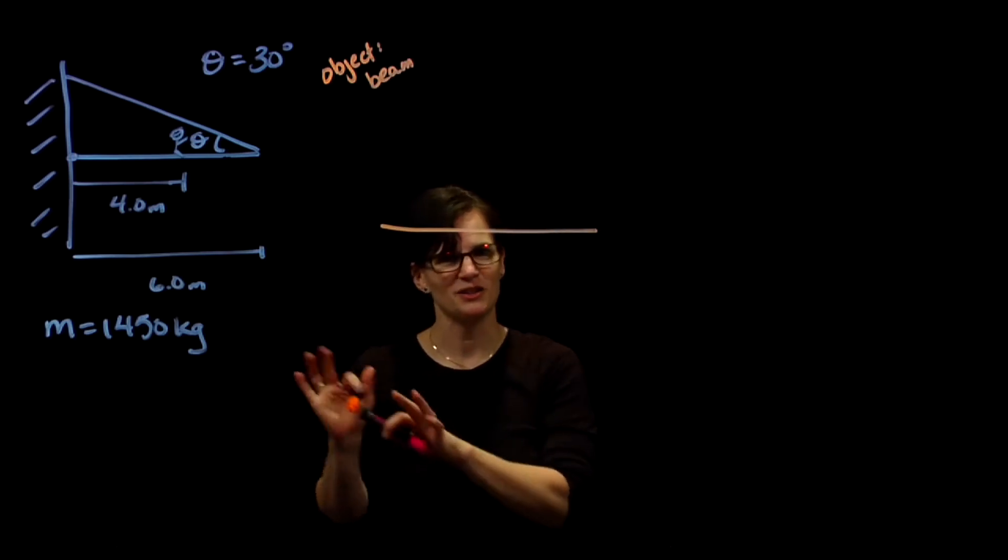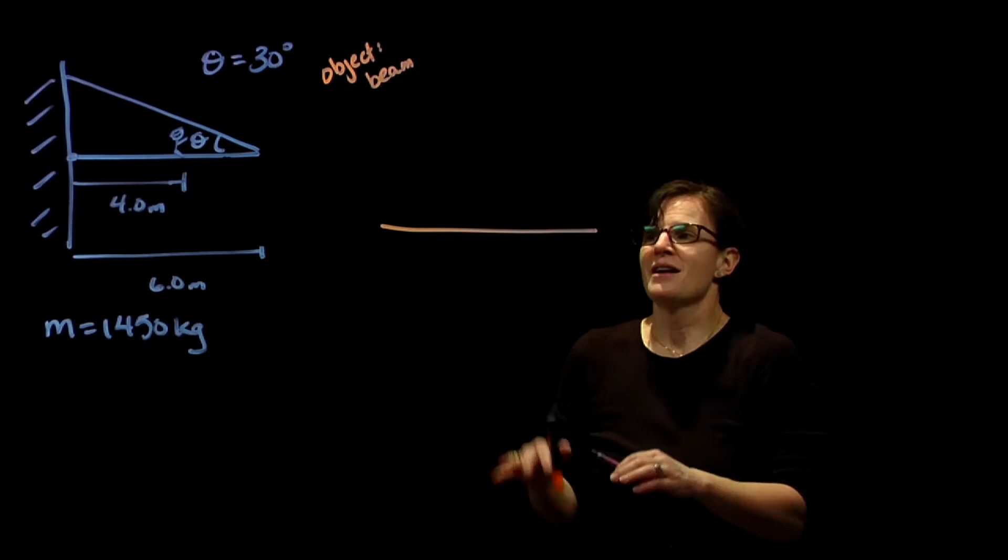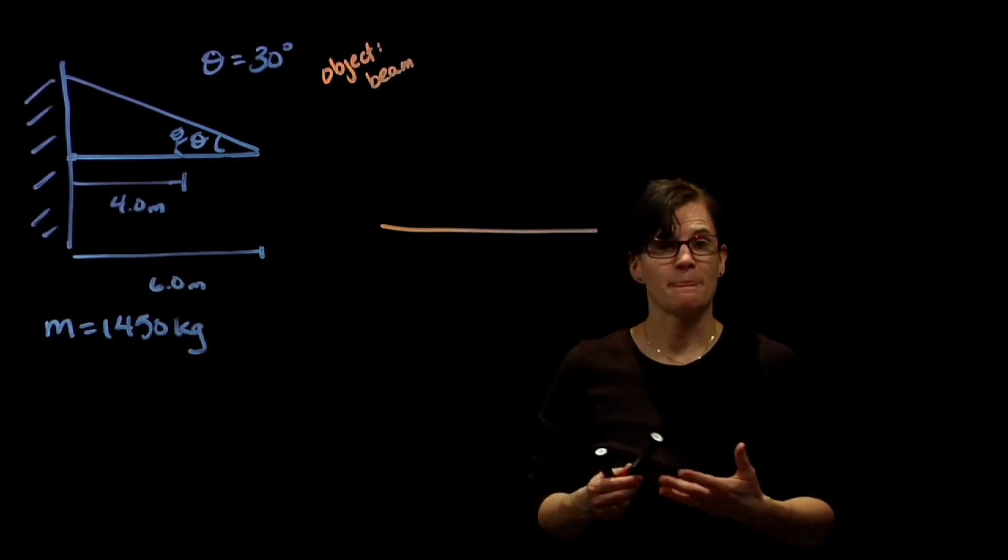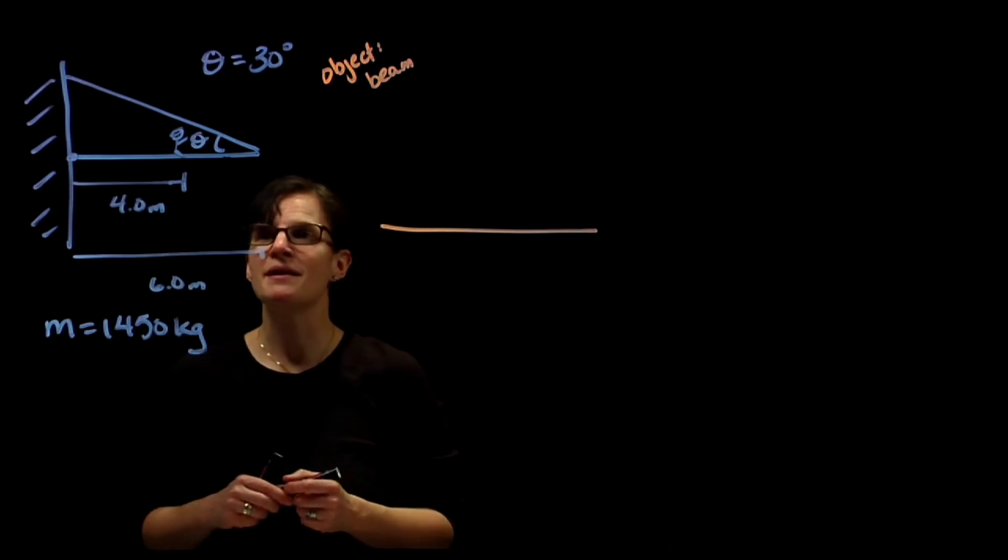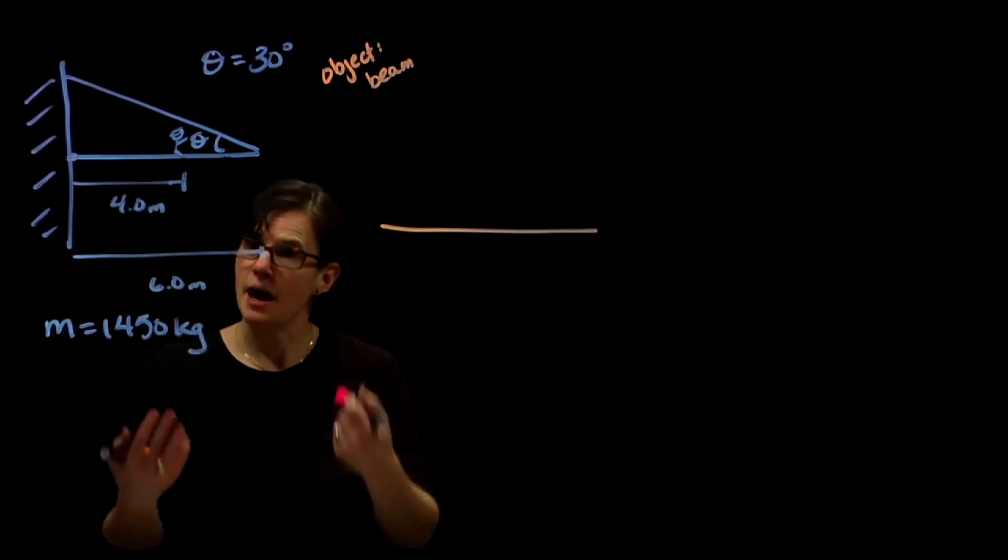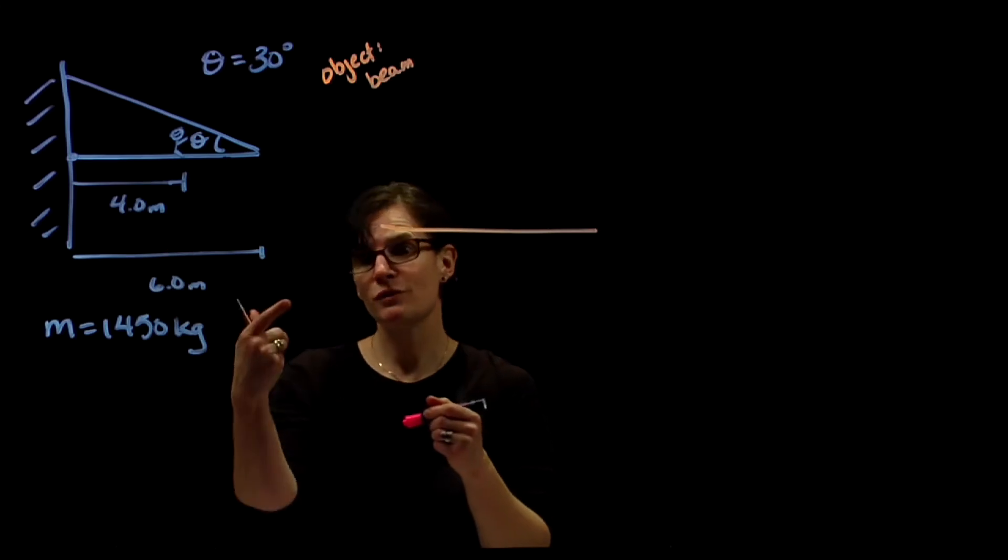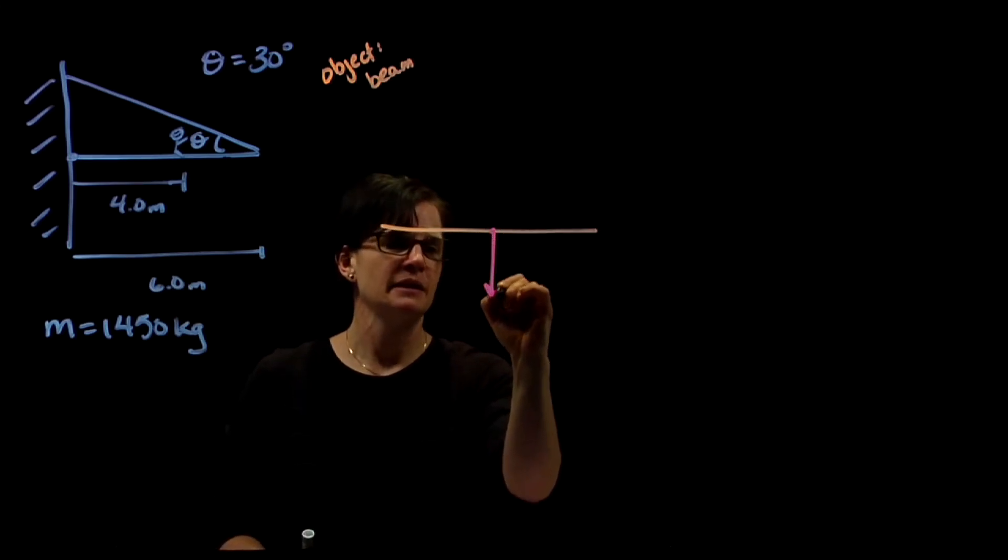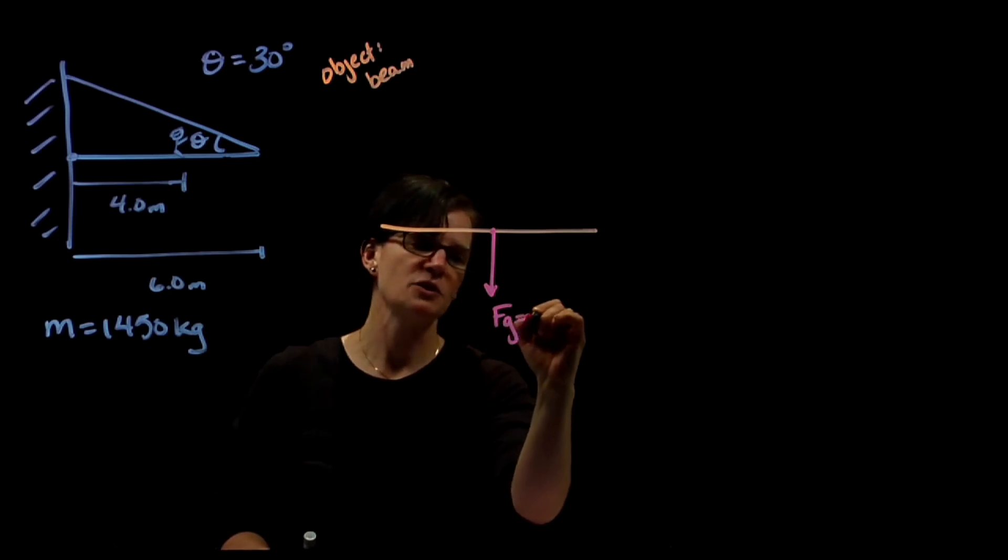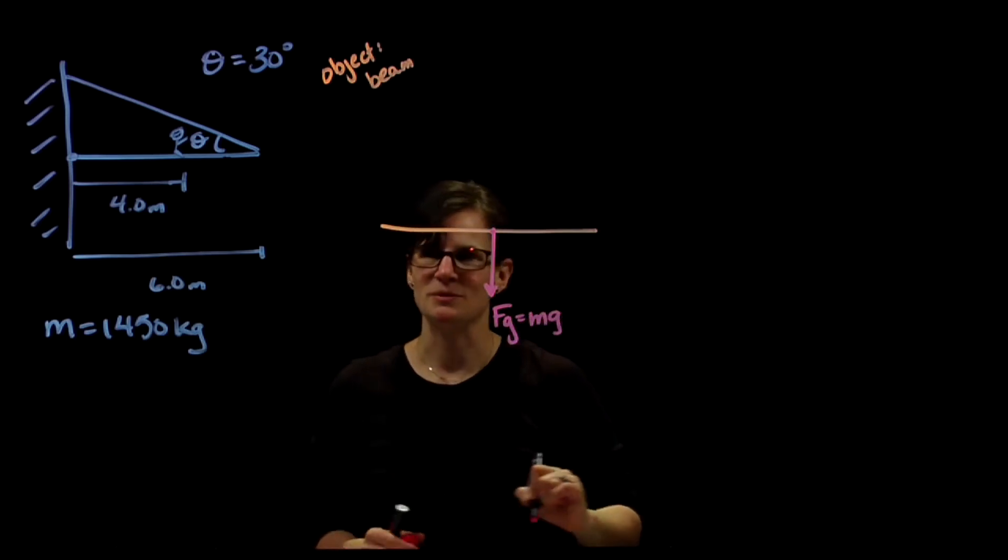What are the forces acting on the beam? We know there's the force of gravity acting on the beam between the earth and the beam. Gravity acts at the object's center of mass. It's a uniform beam, so the center of mass is in the geometric center. So we have our force of gravity, which we know to be mass times gravity.